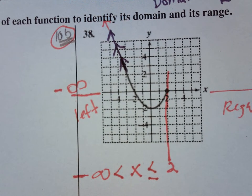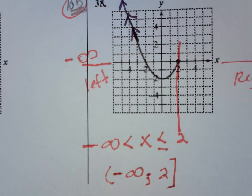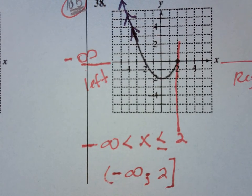In interval notation, that ends up being easy. It's minus infinity comma 2. And it includes, so it would be square bracket. So interval notation would be an easy way to do it too.